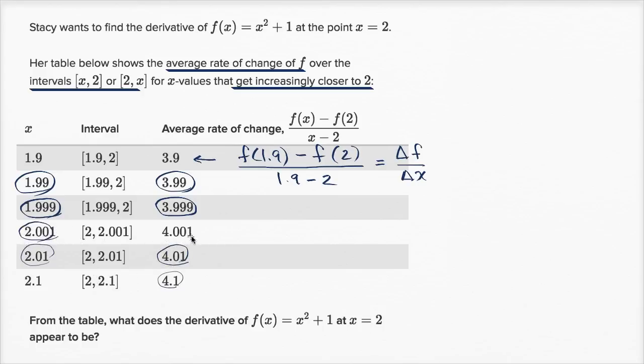The closer we get to 2, the closer the average rate of change gets to 4. So what this data is really helping us approximate - the average rate of change we know is [f(x) - f(2)] / (x - 2), but what we're really thinking about is,